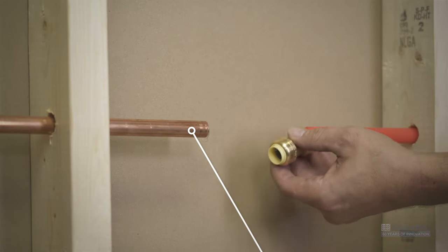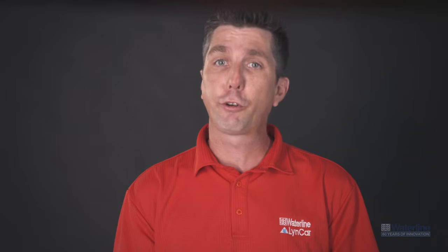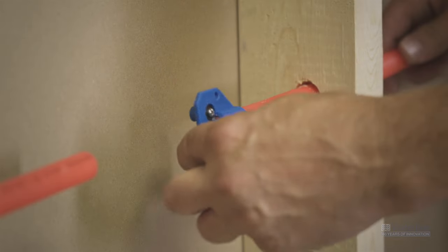If you're installing copper pipe, remember to remove any burrs or sharp edges with emery cloth and the push and connect depth and deburring tool.